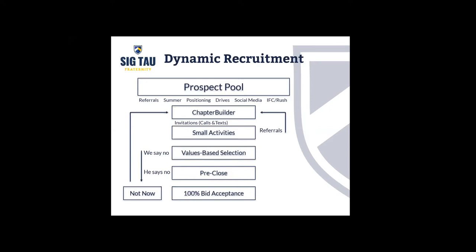So the flow is: prospect pool, Chapter Builder, small events and other events to build connections, then filtering through tangible measures. From there, we move into the pre-close phase — when someone is so close and you can see they're interested but a little hesitant. The pre-close is meeting one-on-one as men and asking, 'How can I make sure this is a 100% yes for you? How can we get you there?' Either he says no, or we say no based on values-based selection criteria — or we extend the bid and he signs. This dynamic recruitment model is something every chapter should adopt, and it will be part of the recruitment plan template coming out next week.